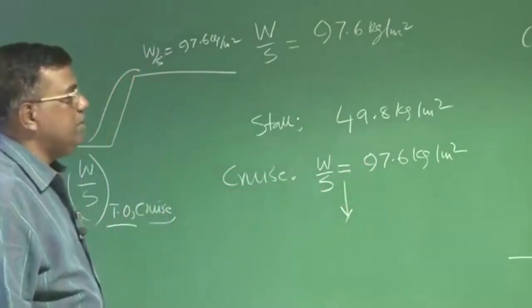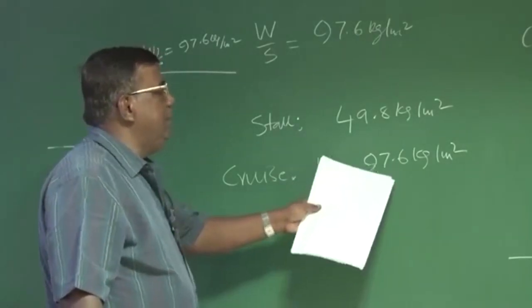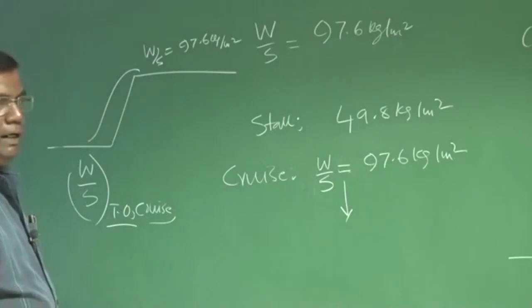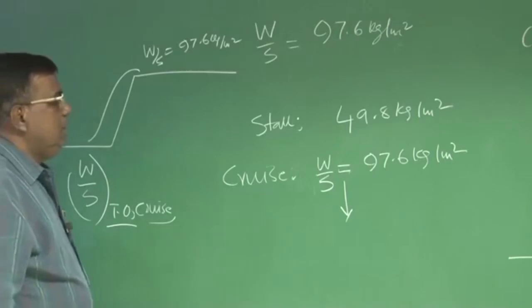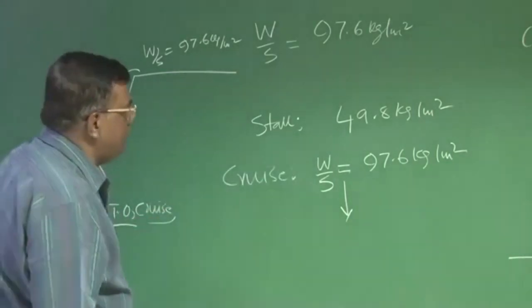But the point here is very simple. If I take W by S as 110 or 120 kg per meter square, then problem is how it is going to affect your stall.